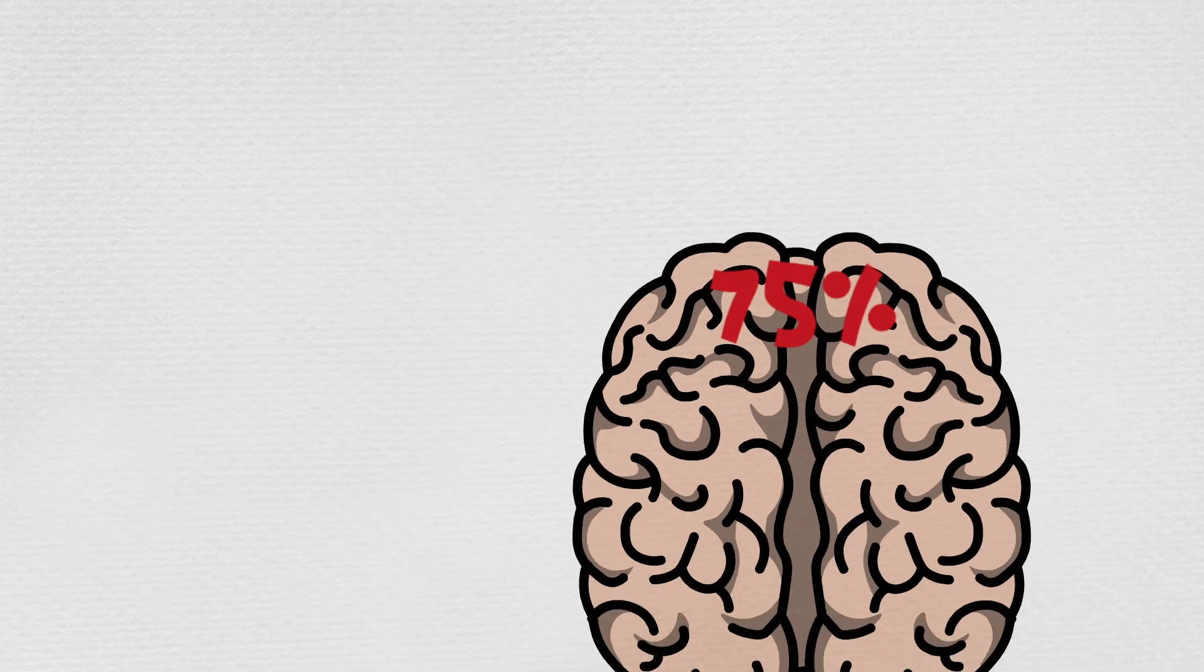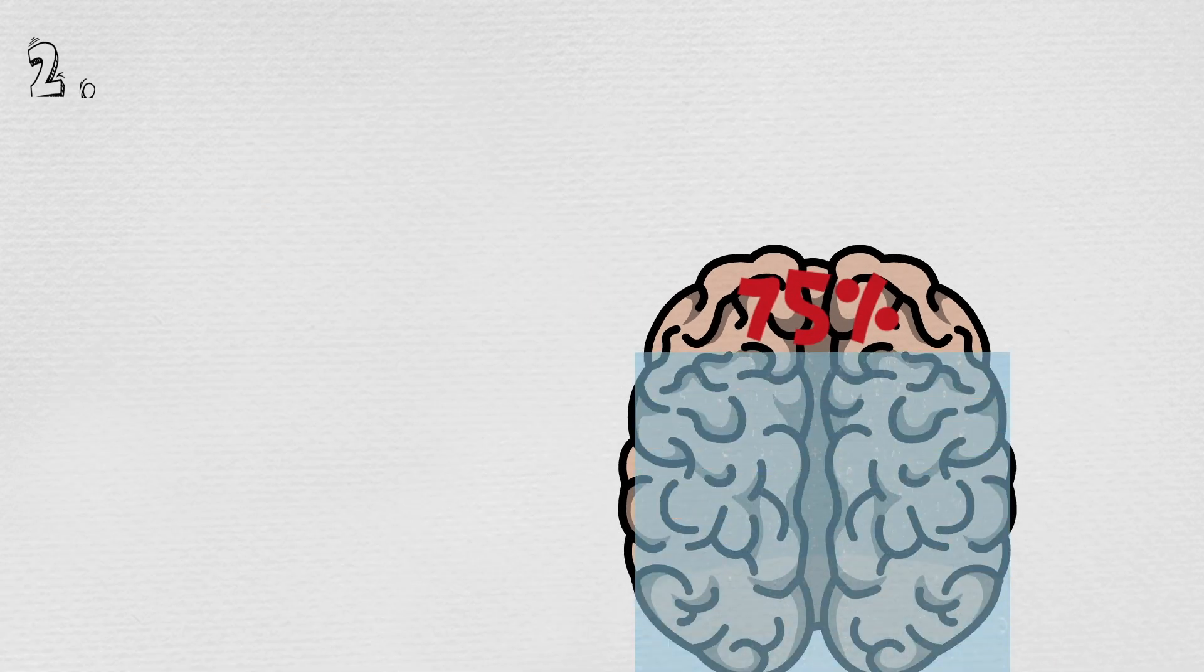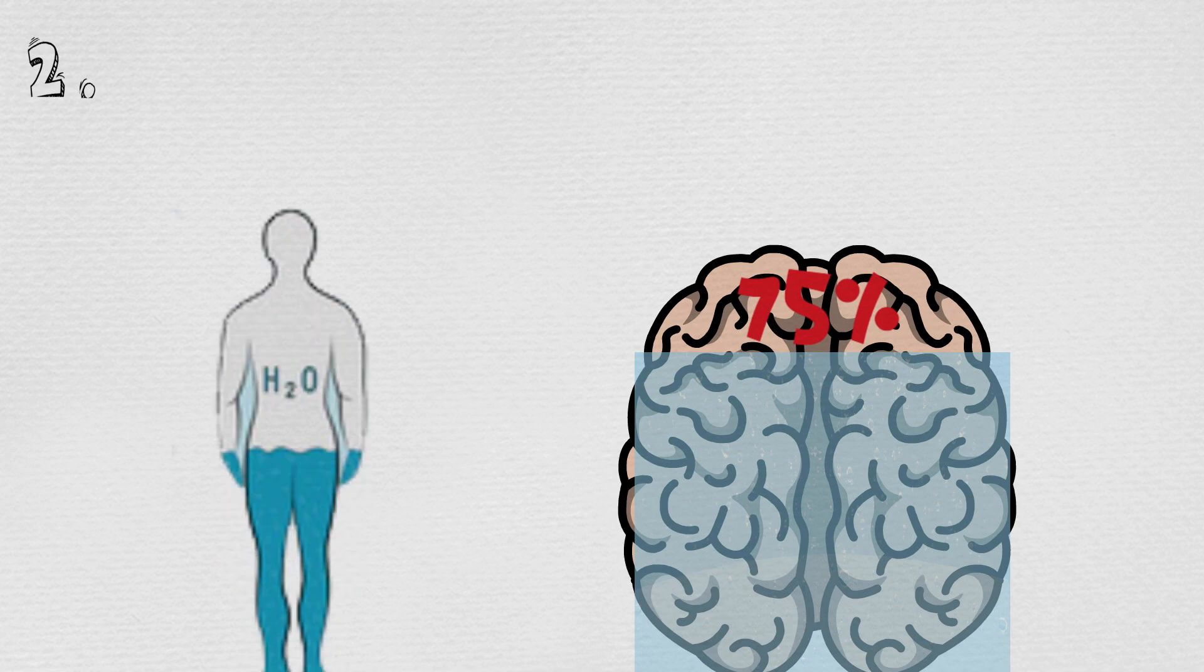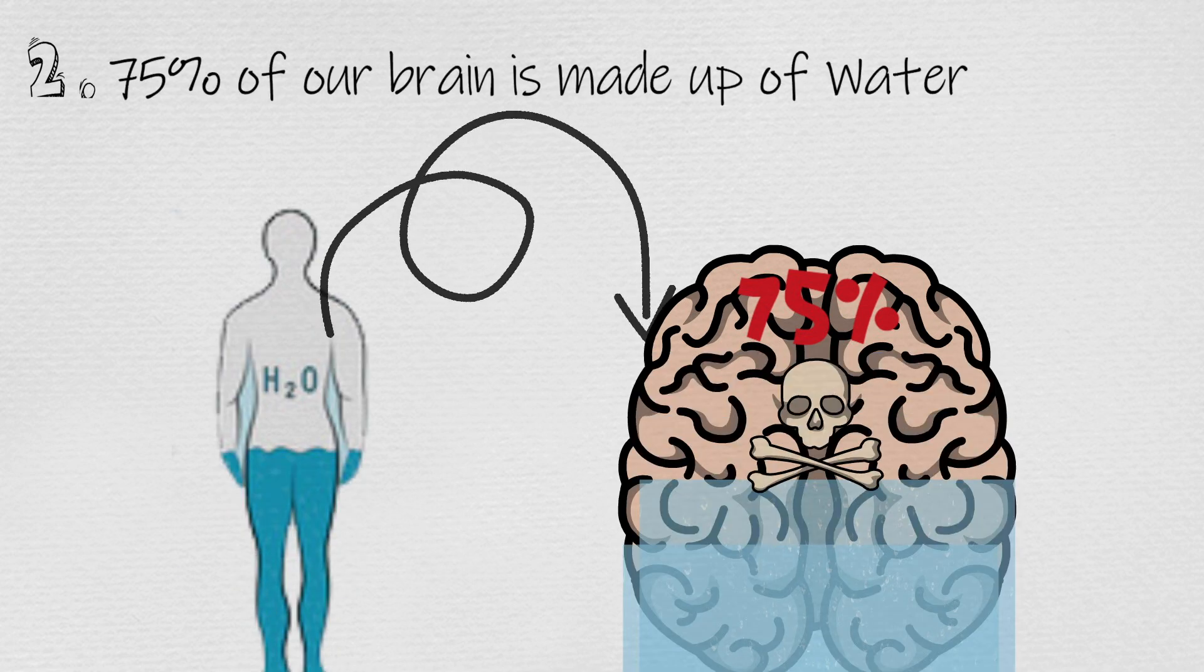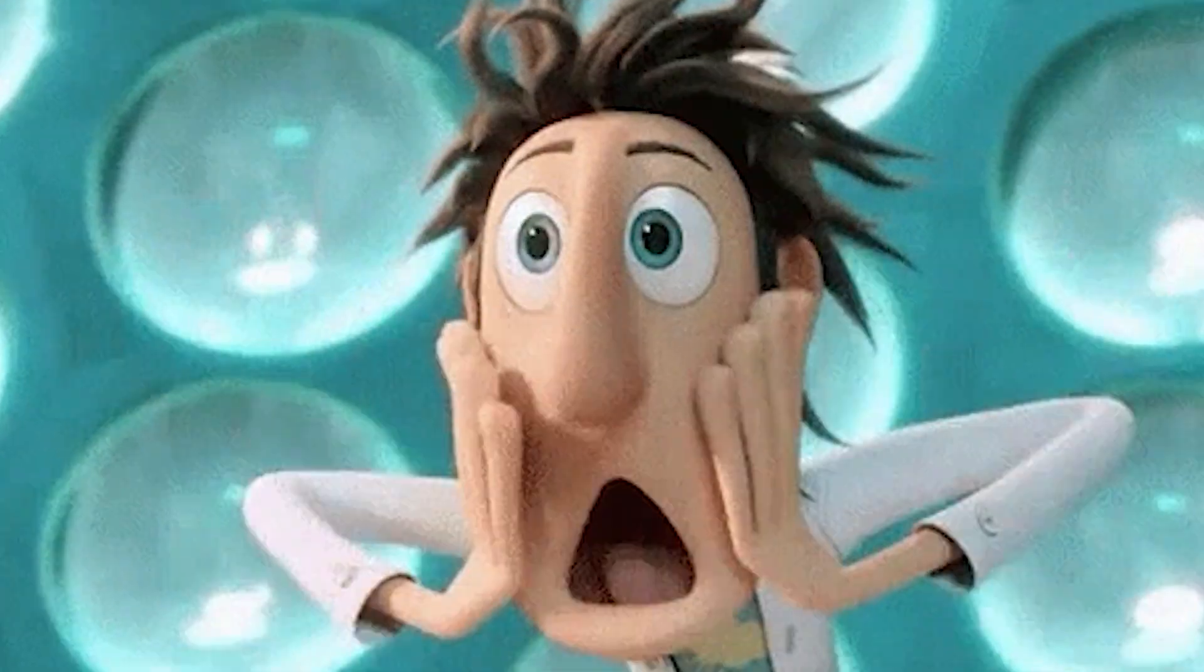Number two: Humara 75 percent brain paani se bana hua hai, yaani thoda sa bhi dehydration humare dimaag per negative effect dal saktah hai. Oh my god, that's too much of water.